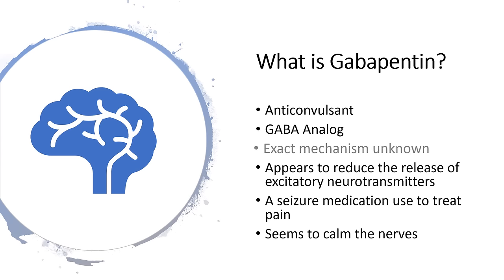So what is gabapentin? It's technically an anticonvulsant used to treat seizures, or something called a GABA analog. The exact mechanism is unknown. It does appear, however, to reduce the release of excitatory neurotransmitters. What I usually tell people — it's a seizure medicine used to treat pain because it seems to have a calming effect on the nerves, especially pain related to the nerves.